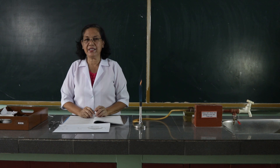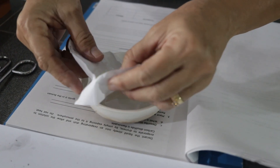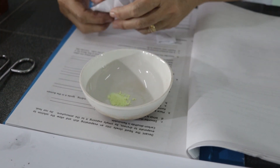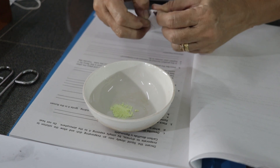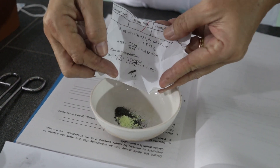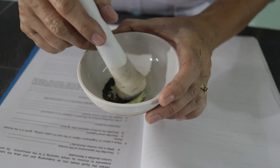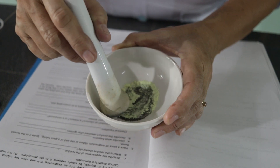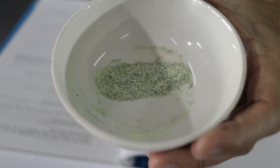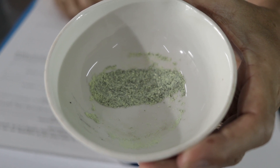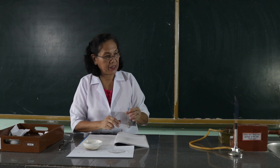The next procedure is, we are going to mix the iron filings and sulfur in an evaporating dish. This is sulfur, and we will mix this with iron filings. Observe the mixture.